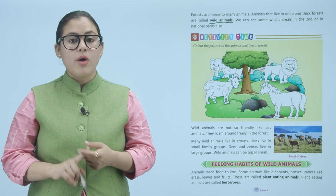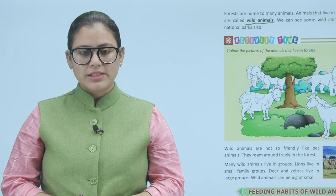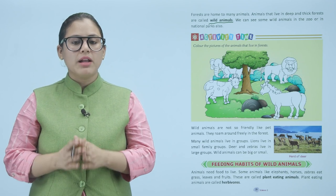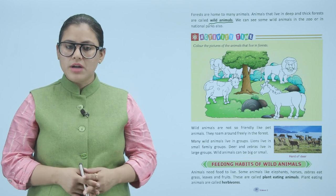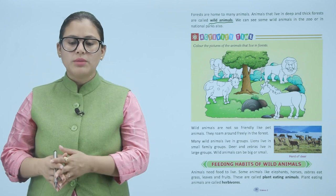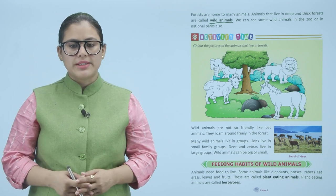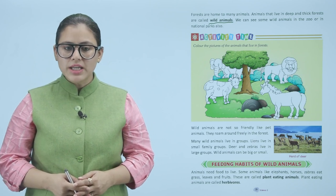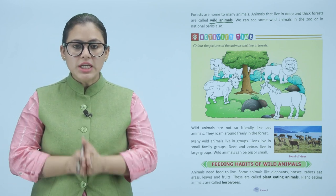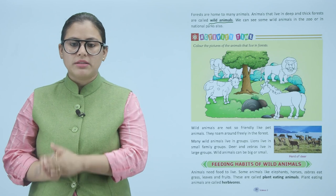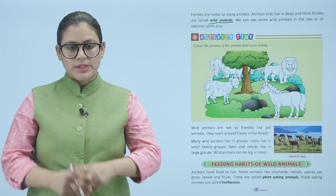Feeding habits of wild animals. Animals need food to live. Some animals like elephants, horses, and zebras eat grass, leaves, and fruits. These are called plant-eating animals. Plant-eating animals are called herbivores — animals which eat only plants.